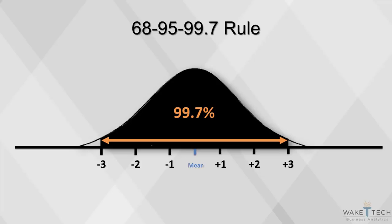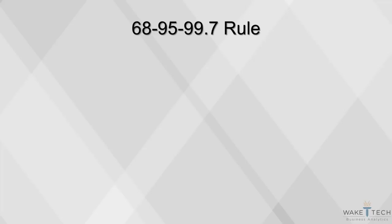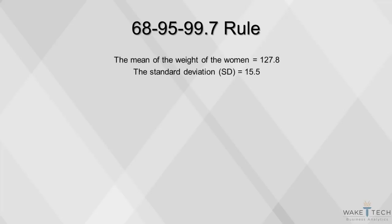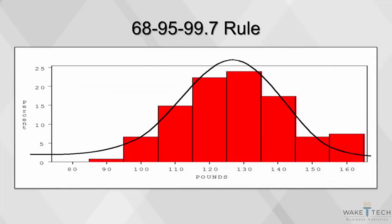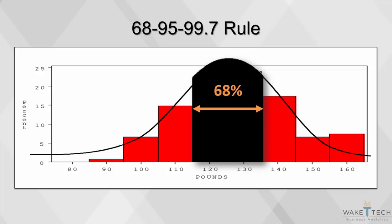This is true for all normal curves, no matter their shape. Let's check out an example. The mean weight of 120 women runners in a sample is 127.8 pounds, and the standard deviation is 15.5. 68% of our 120 runners is about 83 runners. According to the 68-95-99.7 rule, those runners should all fall within one standard deviation of the mean weight of 127.8 — that is, 83 of our runners should fall between 112.3 and 143.3 pounds.